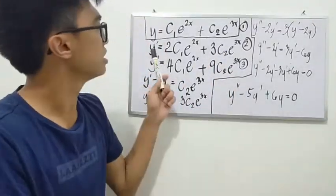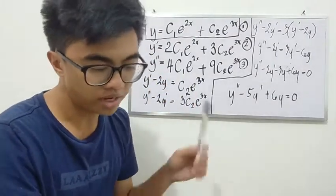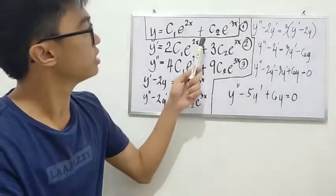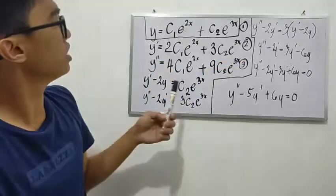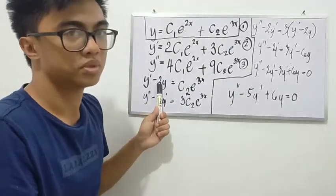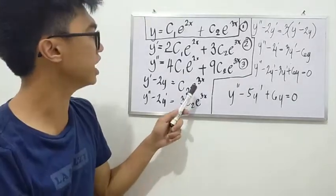Next is to eliminate the first constant. To eliminate, you have to multiply the first equation by 2 and then subtract it from the second equation.